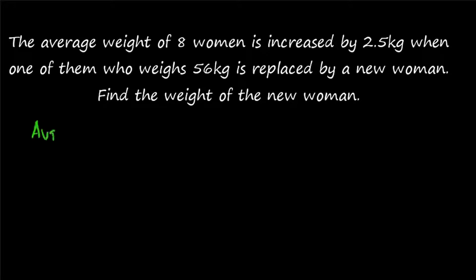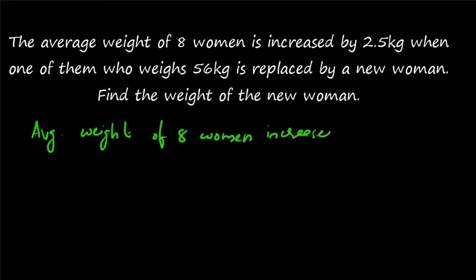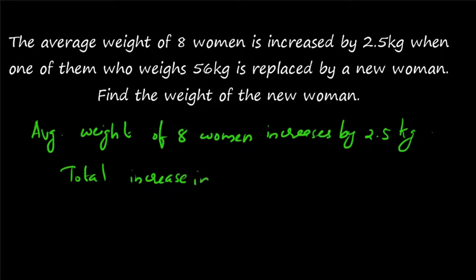The average weight of 8 women is increasing by 2.5 kg when one woman is replaced by another woman — a similar kind of question included for better understanding. Average weight increases by 2.5 kg, so the total increase in weight will be equal to 8 into 2.5. What is 8 into 2.5? It is 20 kg.